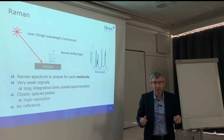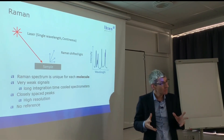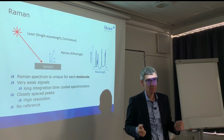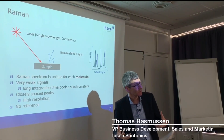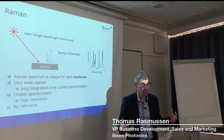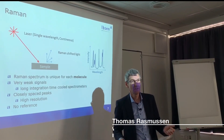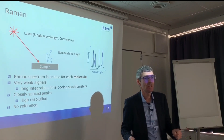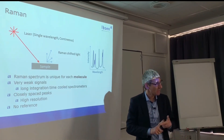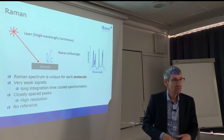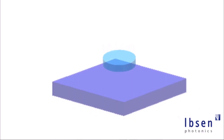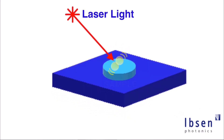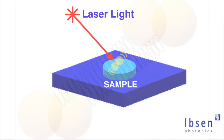Raman spectroscopy is a little bit different than most spectroscopy methods. In most methods you use a broadband source — basically a lamp — so it has light all over the spectrum, more or less like the sun. But in Raman you use a single wavelength source like a laser. There is only one wavelength and you shoot the laser down to your sample, and the light will create a change in the vibrations of the molecules.